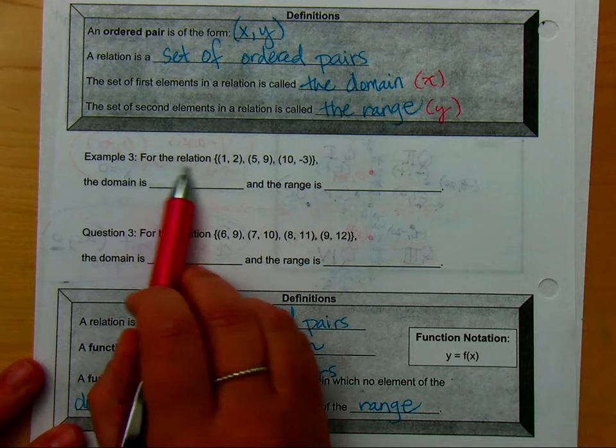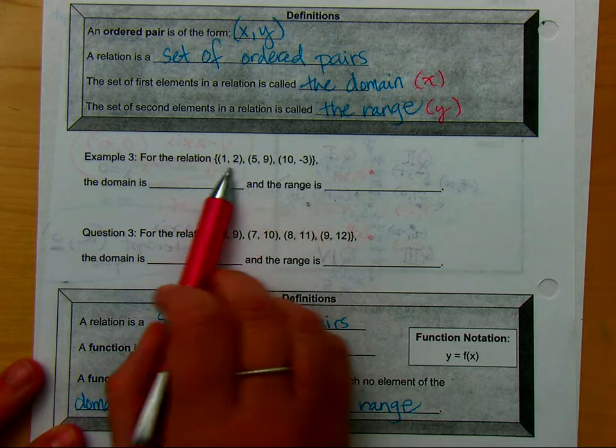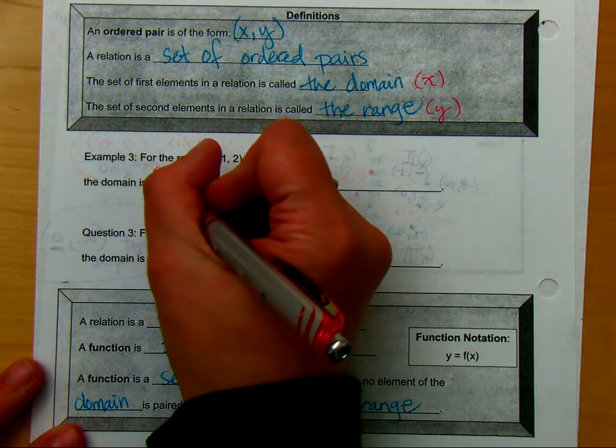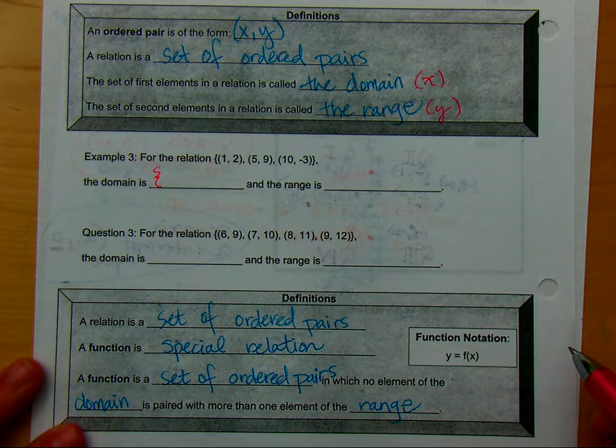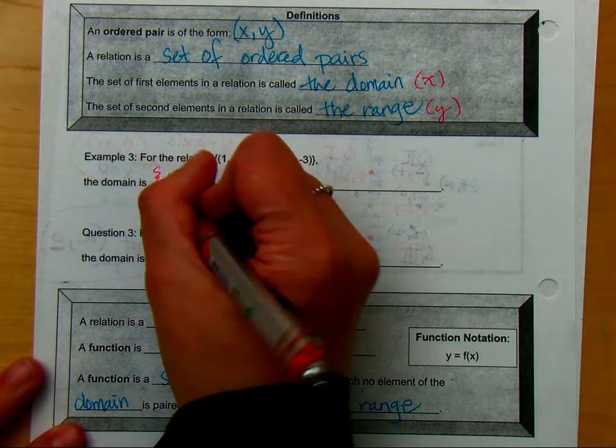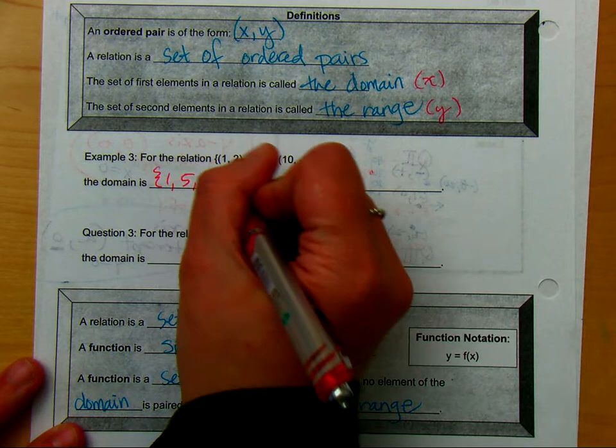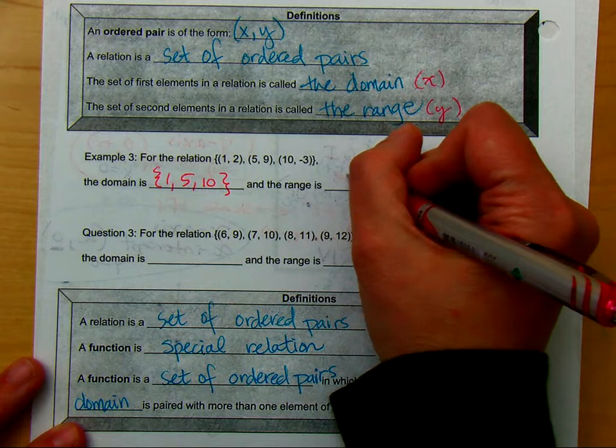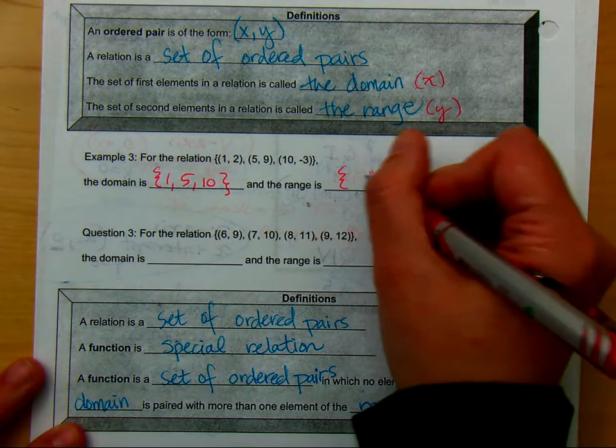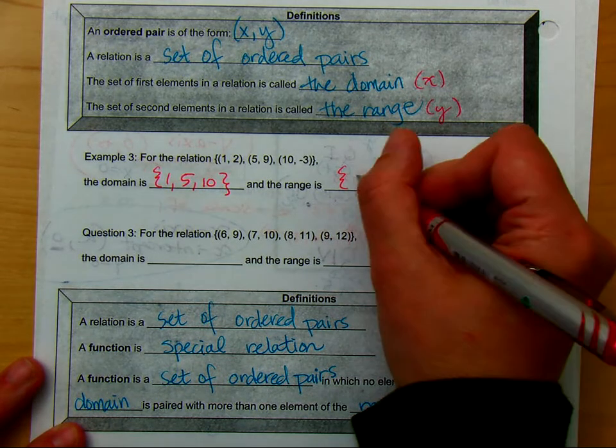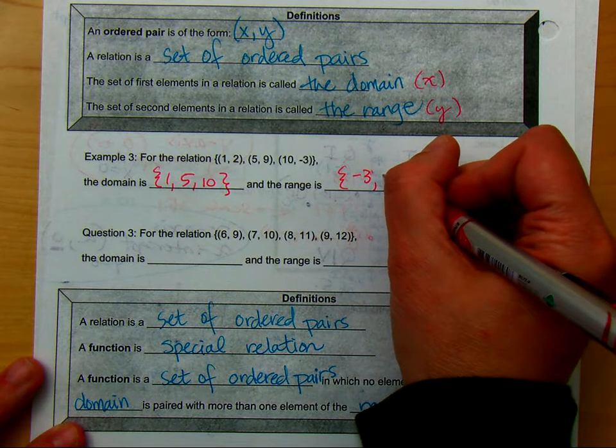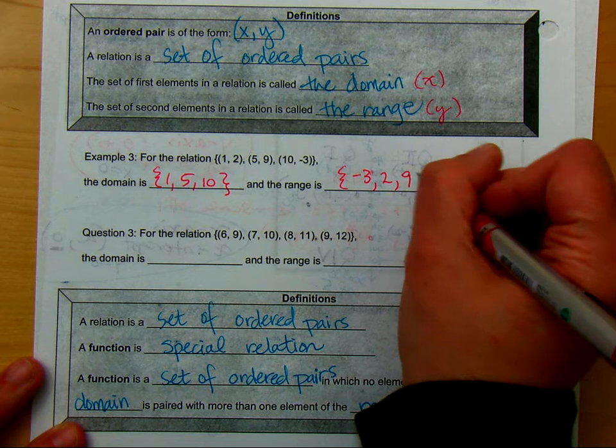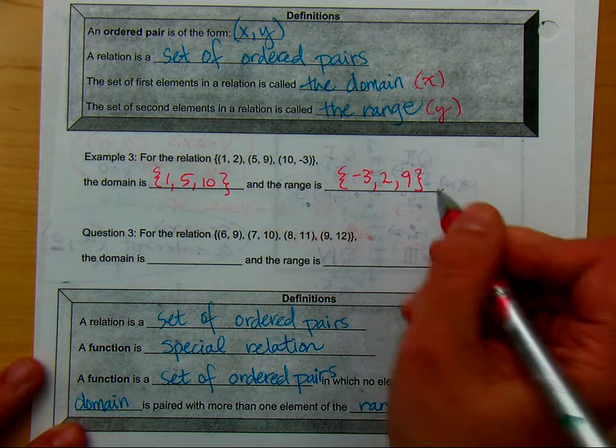So in the first set of ordered pairs, which is a relation, the domain is going to be the set of all of the X values. So what are the X values? Yep, 1, 5, and 10. 1, 5, and 10 represent the domain, and then what is the range? I'm going to list it in order. It doesn't matter that much if you list it in order, but these are all the Y values. I just think it looks better listed in order. We like order in math.